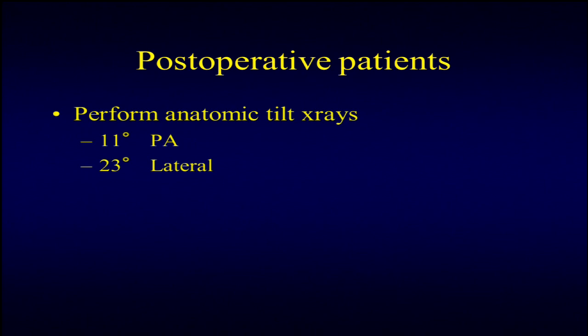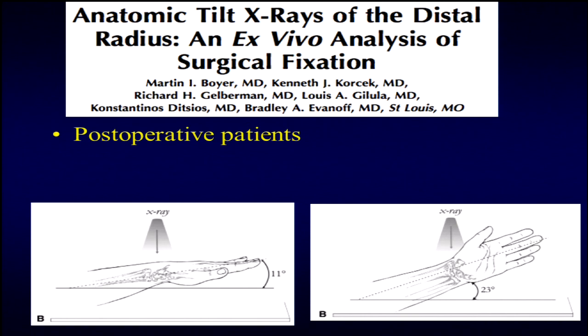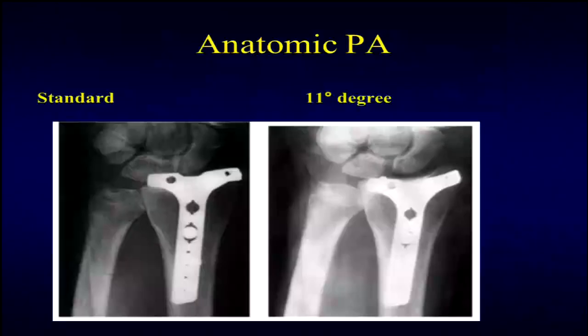For postoperative patients returning to the office, I want a true PA and a true lateral using the anatomic tilt X-rays. Gelberman and Lou Galula published this technique. You want an 11-degree tilt on your volar film so you can look nicely down the joint to ensure there's no screw penetration. On the lateral, you can place your contralateral fist underneath your wrist, which gives you roughly 23 degrees—a simple way to achieve this.